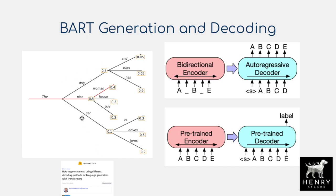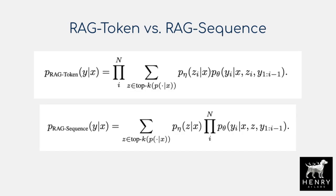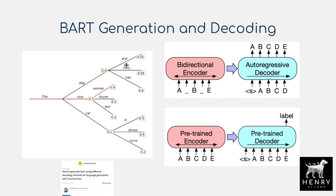In the RAG-token and RAG-sequence models, these probabilities are weighted by the parameters theta of the BART model, as well as the similarity that determines the prior probability on each retrieved document. Because we have 5 to 10 latent documents, we're weighting the probability of the generated token by the probability of retrieving that latent document in the first place. There are more details about exactly how this decoding works in the paper.